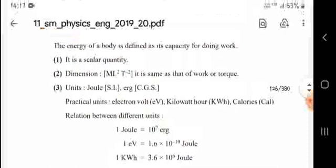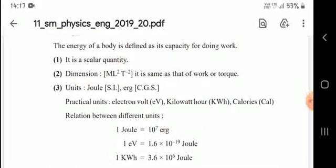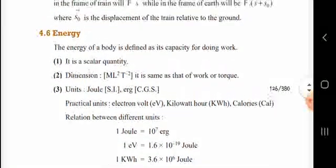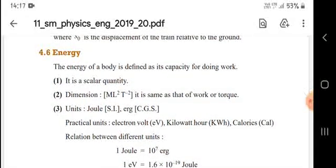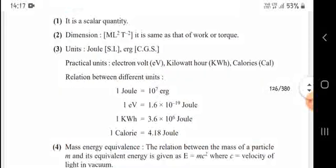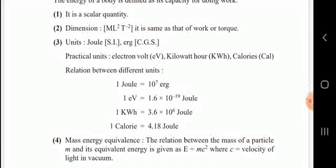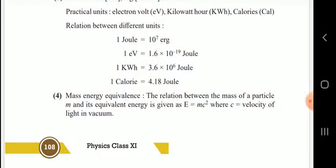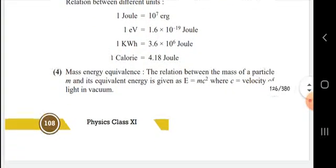Next, energy. The energy of a body is defined as its capacity for doing work. The unit is Joules. One Joule is equal to 10 to the power 7 ergs. One kilowatt-hour is equal to 3.6 × 10⁶ Joules, and 1 kcal is equal to 4.18 Joules.